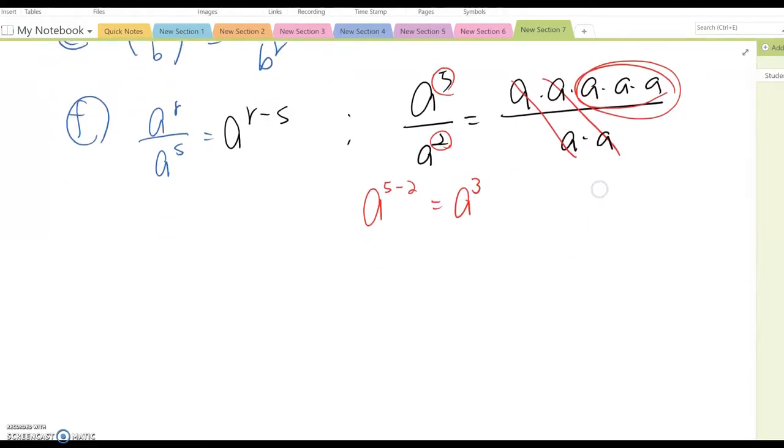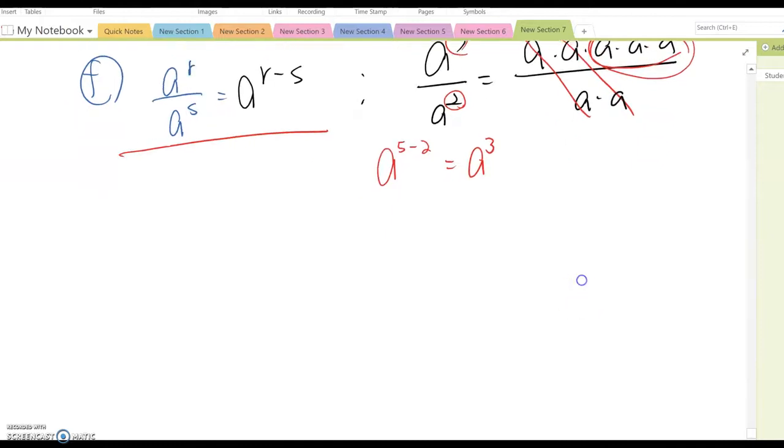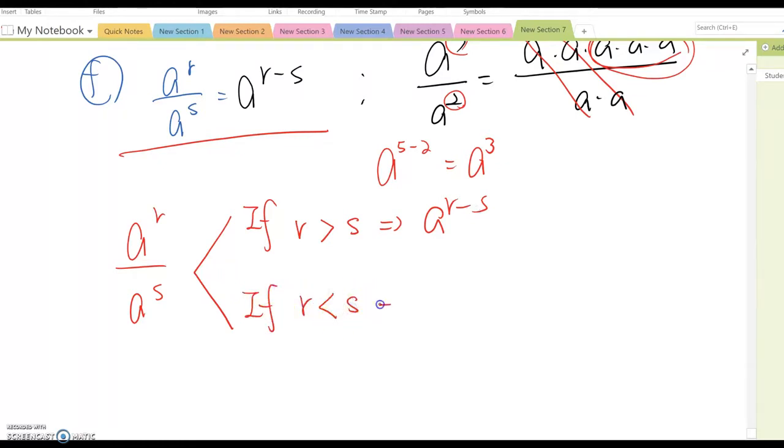But, property F, we can generate two different ways. Here, A to the R over A to the S. If R is bigger than S, then you just follow A to the R minus S. Then, what if R is less than S?